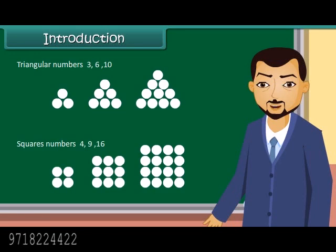Triangular numbers: 3, 6, 10. Square numbers: 4, 9, 16.